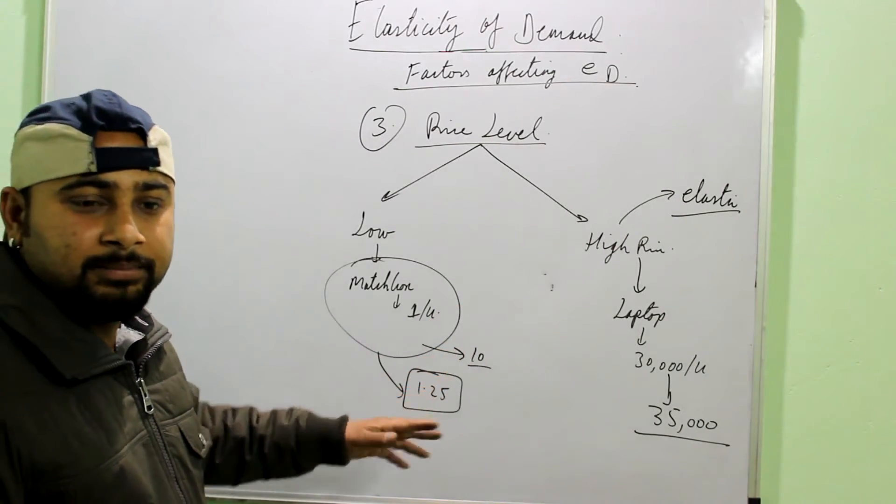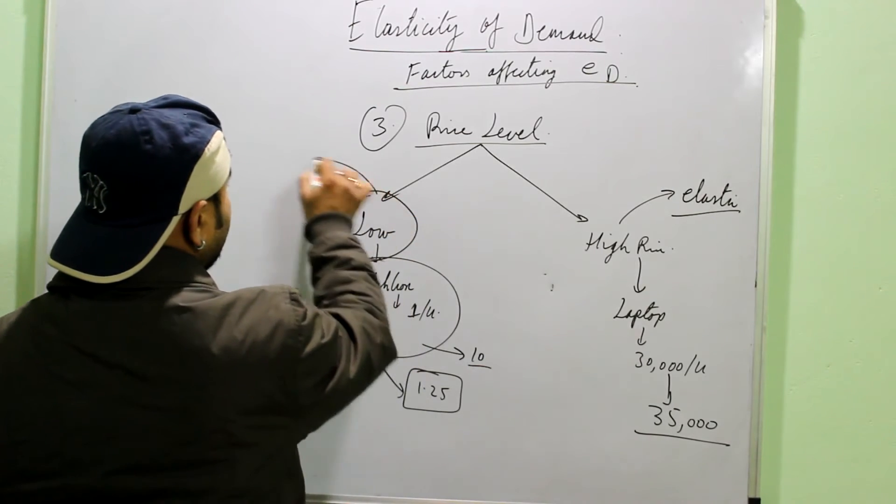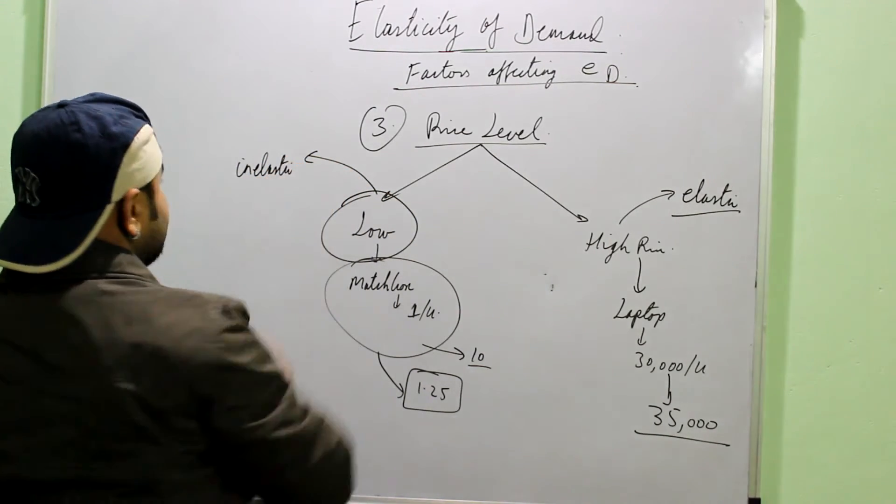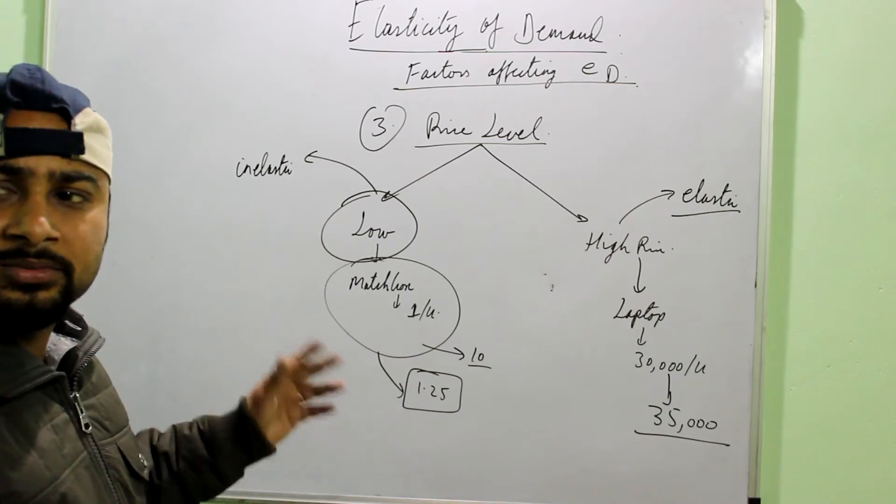Because change in the prices of these commodities affects the consumer's budget. It's a bigger amount of income. Bigger amount of money. But here, for the low price commodities, the demand is generally inelastic. Because changes in the price of these commodities do not affect the consumer's budget.